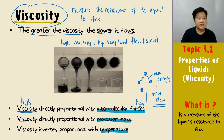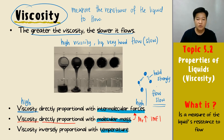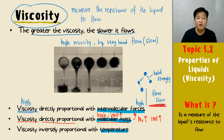Viscosity is also directly proportional with molecular mass, and this is related to the intermolecular forces. When molecular mass increases, the intermolecular forces also increase. So when molecular mass is very high, the intermolecular forces are also very high, causing the liquid to flow very slowly and viscosity to become very high.